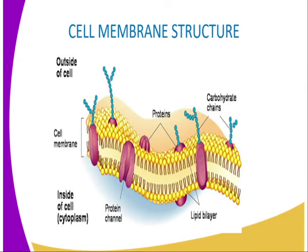As you can see from our diagram, we have the outside part of the cell membrane and we also have the inside part of it. The cell membrane, as seen in our diagram, is made up of a double layer of phospholipids with protein molecules embedded in or attached to the phospholipid bilayer. It has small pores, whereby the function of those pores is to allow the passage of substances into and out of the cell.